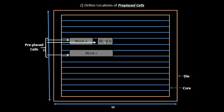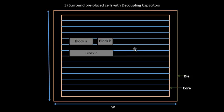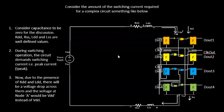Once preplaced cell locations are well defined, the next thing we need to do is surround them with decoupling capacitors. Let me give a brief idea of what decoupling capacitance is and why we need it.